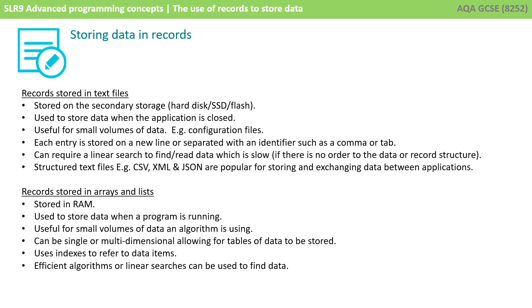Next, we looked at records stored in arrays or lists. This is when the data is read from the file and then stored in memory, used to store data while a program is running, and again useful for small volumes of data an algorithm is using. The array can be single or multi-dimensional, allowing for tables of data to be stored. It uses an index to refer to data items, and efficient algorithms or linear searches can then be used to find the data in RAM.